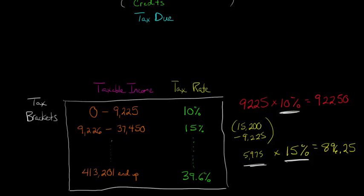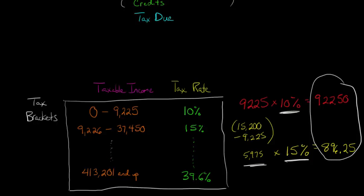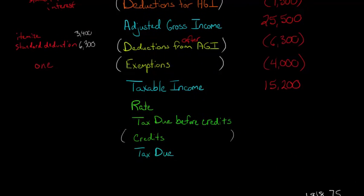This is the basic idea of how tax brackets work. There are a large number of brackets — if you're in the highest bracket and make $413,201 or more, you'll get up to a 39.6% rate. But remember, you're only paying 39.6% on the amount of taxable income that exceeds $413,201. We add the two tax amounts together to get $1,818.75.